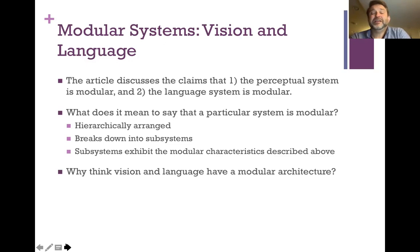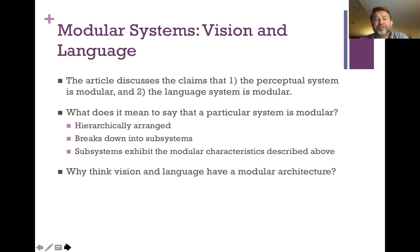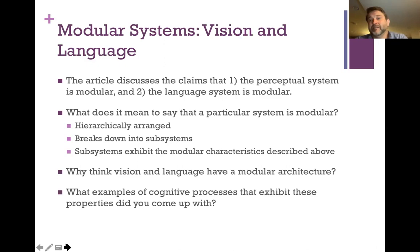Why should we think that vision and language have a modular architecture? That's a question I want us to debate in more detail when we meet for our group discussion. I also want you to think about what examples of cognitive processes that exhibit these properties you came up with — that's your homework assignment. We'll discuss these two components, though of course they're discussed in great detail in the article itself.